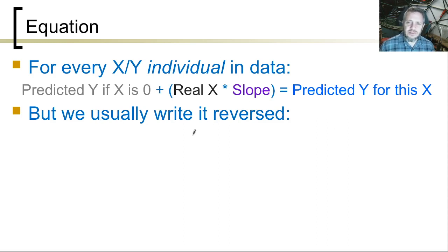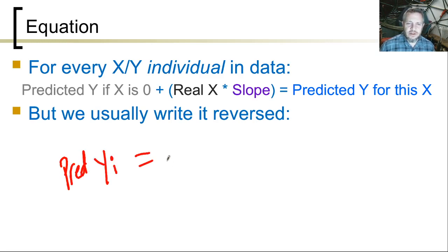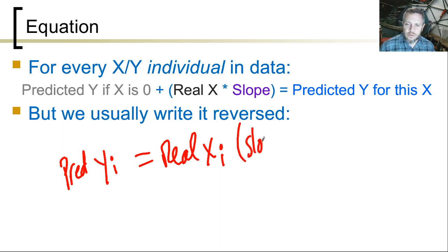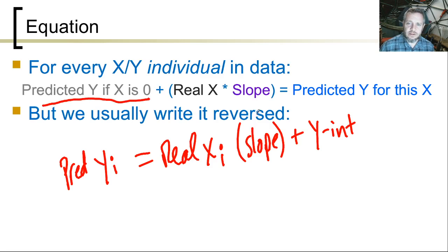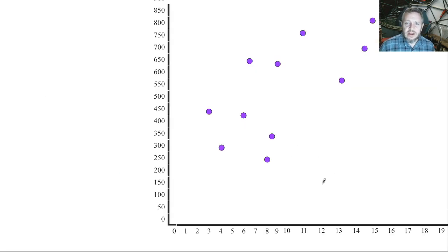We usually write this reversed. The predicted y for this x value equals the real x for this particular person times the slope — which is the same for everybody — plus the y-intercept, which is the same for everybody. So that's the predicted y if x is zero — that's the y-intercept, and the slope is the slope. In math you can rearrange it, but it's the same thing.